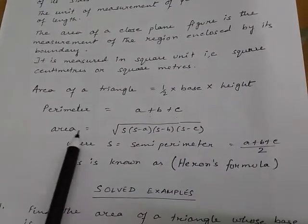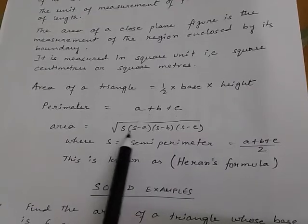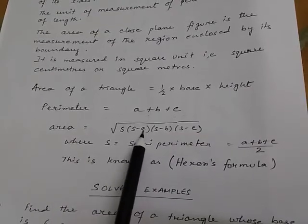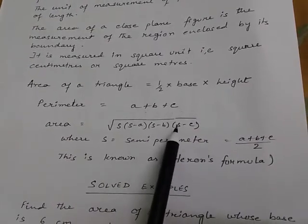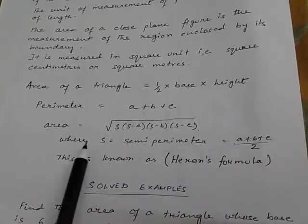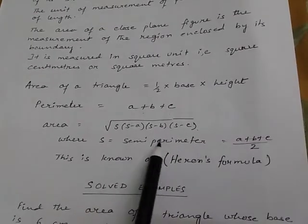Area is equal to root over s in bracket s minus a into s minus b into s minus c, where s is known as the semi-perimeter.